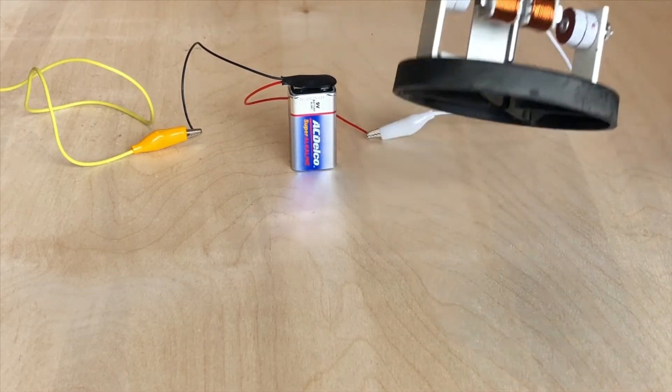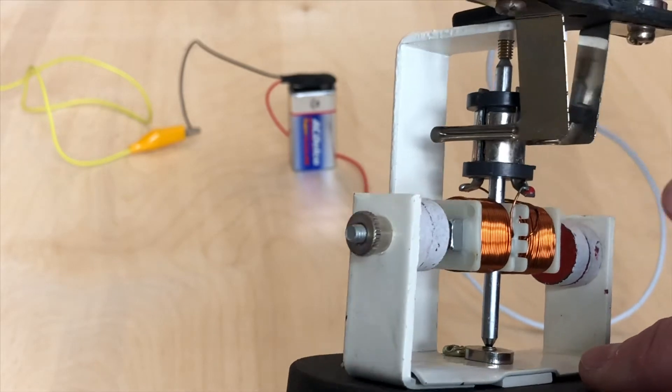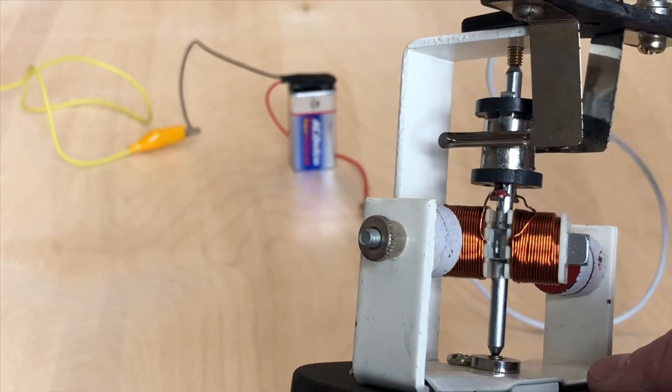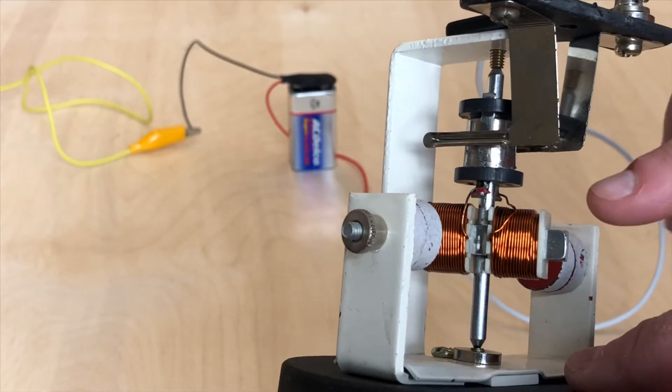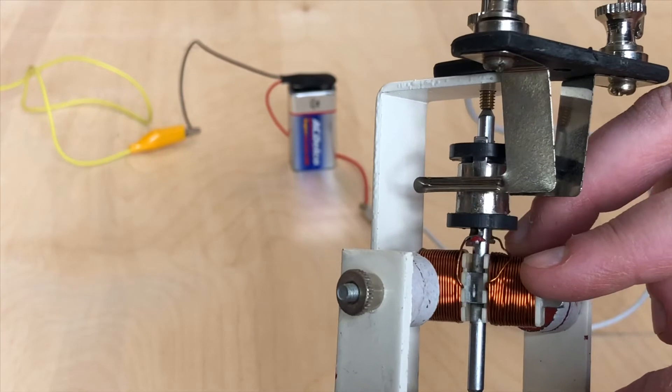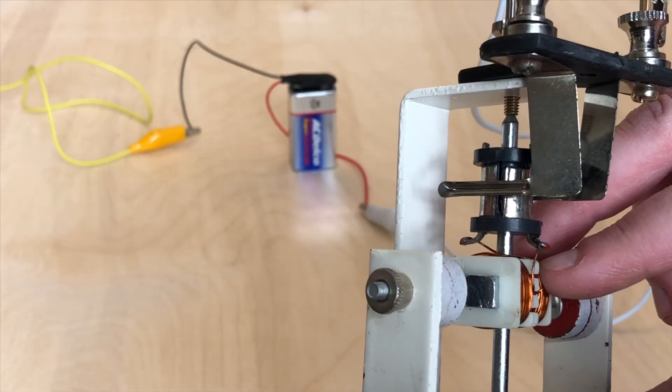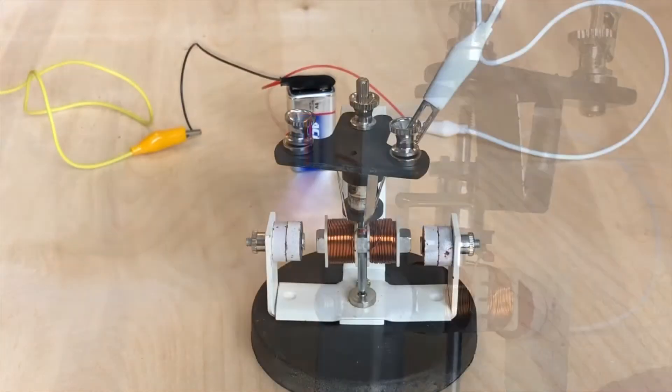This is the split ring commutator. When the brushes, these are the brushes right here, when they are connected to the metal part of the commutator, then current will flow through the circuit which is our motor circuit. When they are actually contacting the split, this black part right here, we will have a temporary break in the circuit and a stop in the flow of electricity.